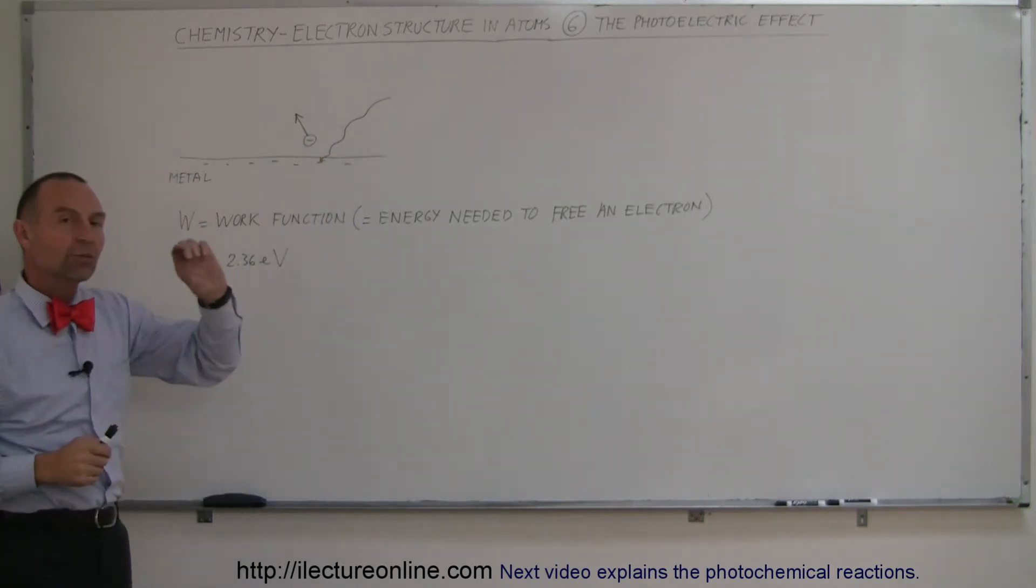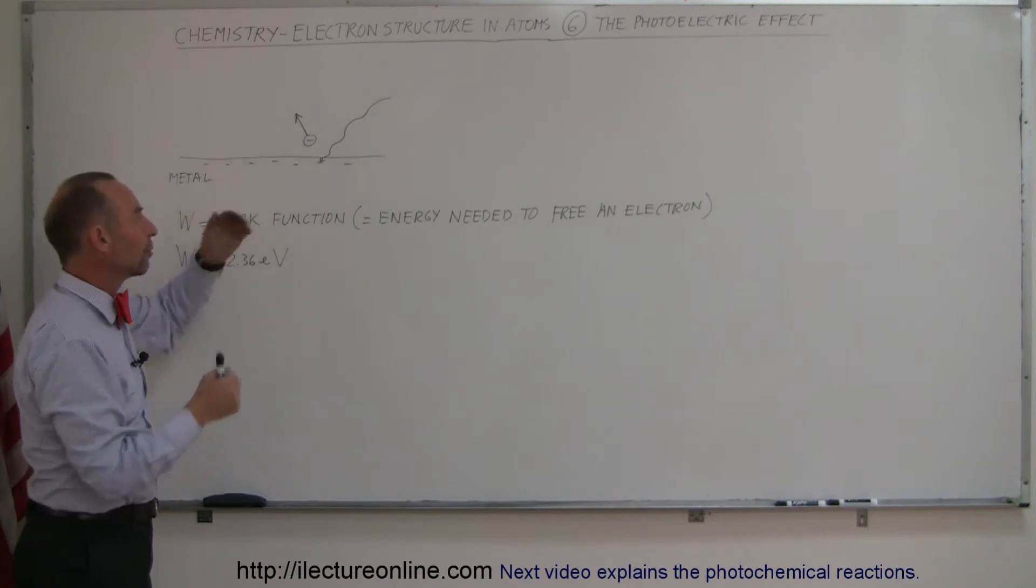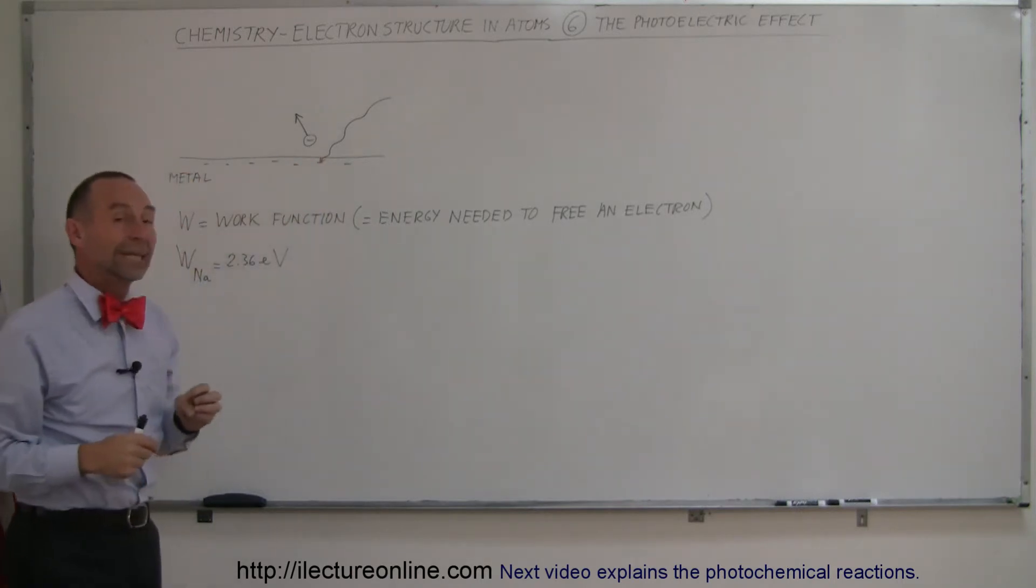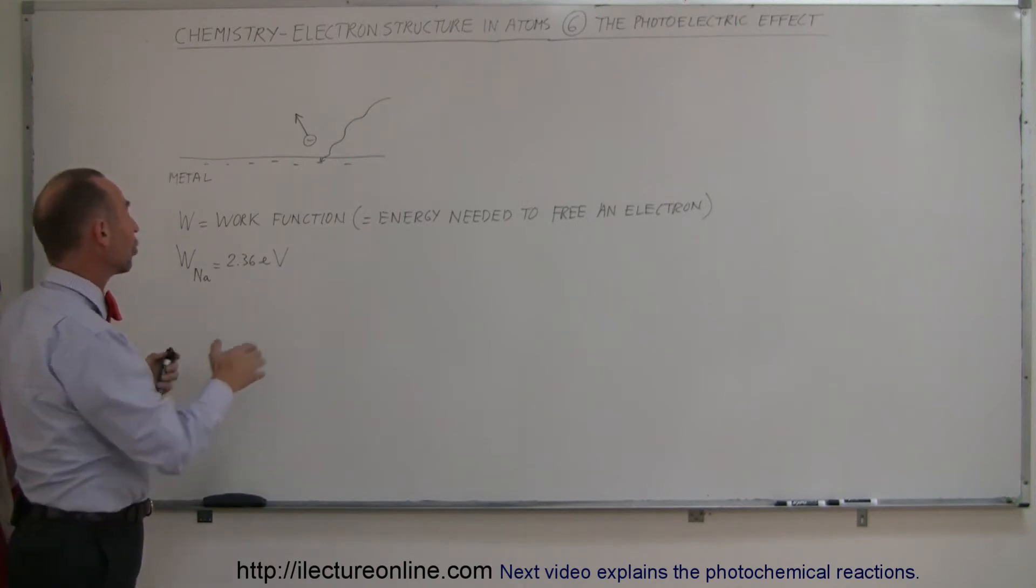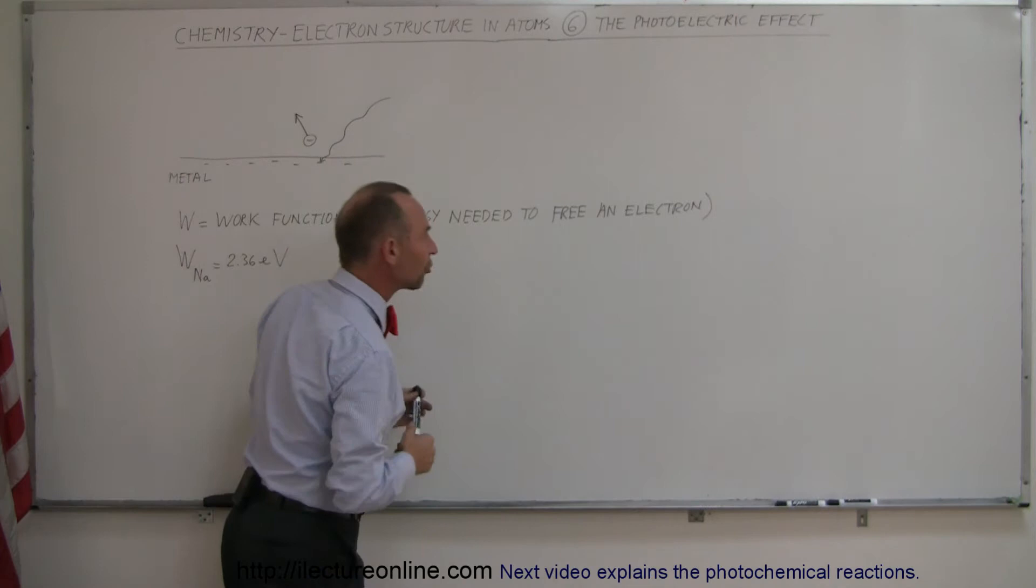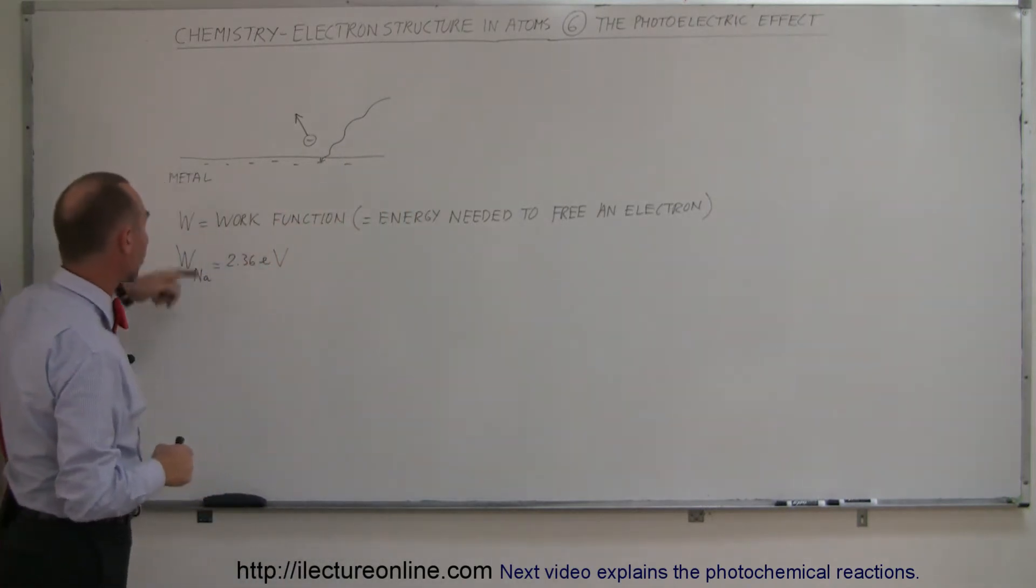And so a fairly small amount of energy imparted upon the surface of metal could potentially send an electron free. The amount of energy required to send an electron free, to break it free from the attractive forces to the other charges that are within the metal, is called the work function. The work function is the energy needed to free an electron. And for sodium, the work function is 2.36 electron volts.